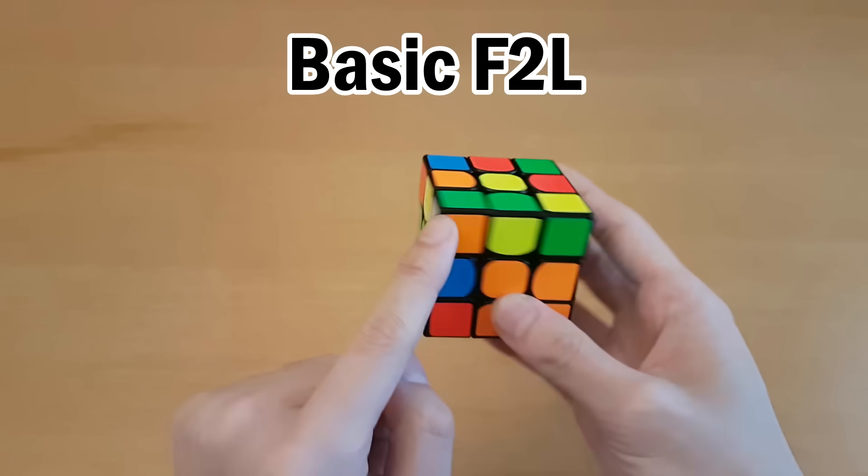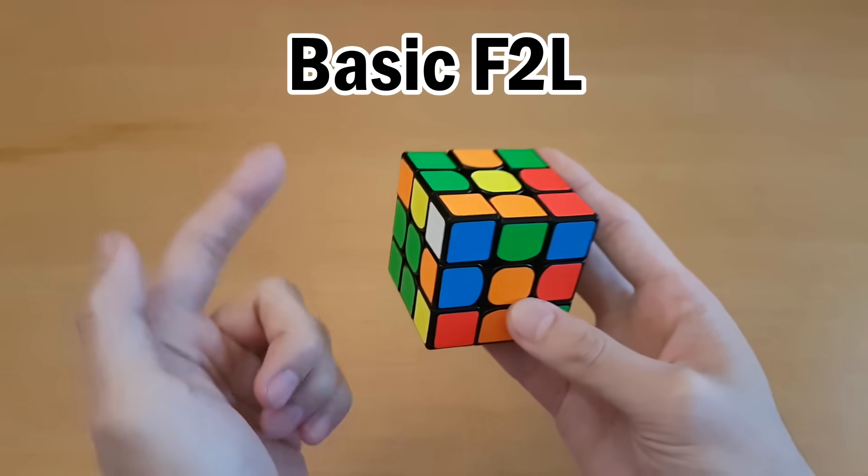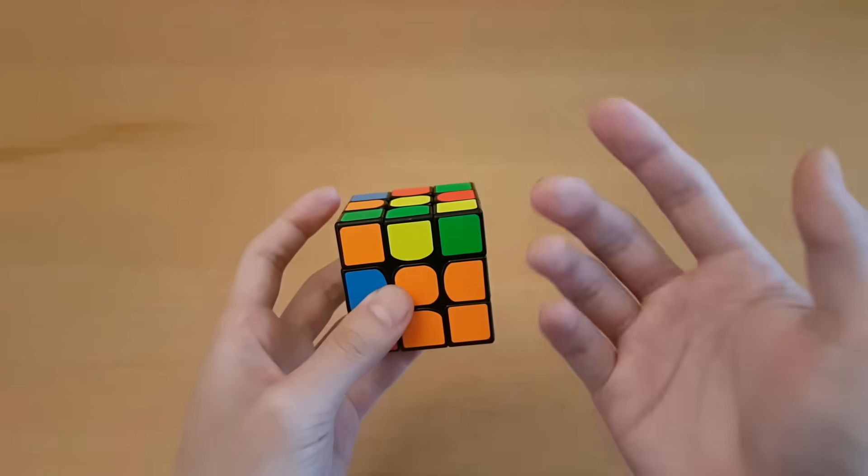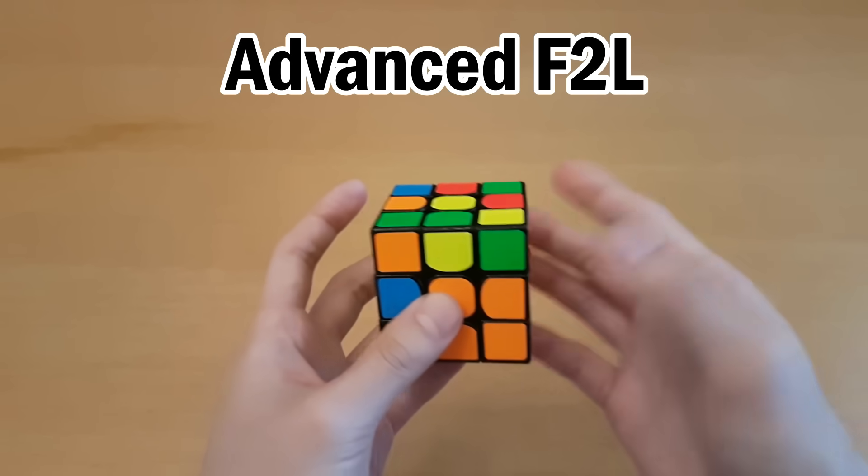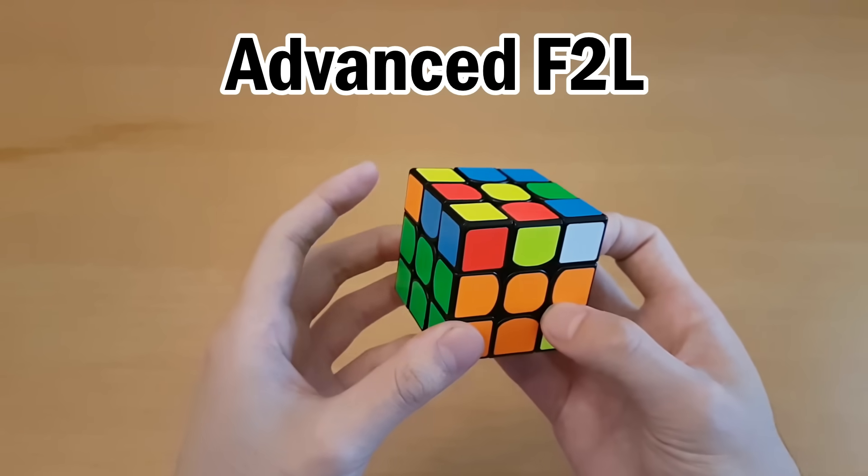So before lookahead will actually become useful to you, here are some things you have to be able to do first. So if you have a pair like this, one of the steps of F2L is to make sure that they're both in the top layer. But this isn't the best way to do it because with Advanced F2L, you have to be able to get them into the top layer while pairing them up at the same time like this so that you can insert it right away.